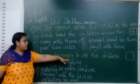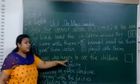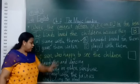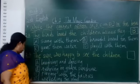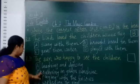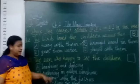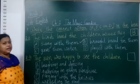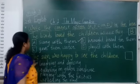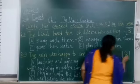Fourth question: The sun was happy to see the children — Option A: laughing and dancing. Option B: running in golden sunshine. Option C: playing with the fairy. Option D: watering the plants. The correct answer is Option B — running in the golden sunshine. Write Option B in the box.